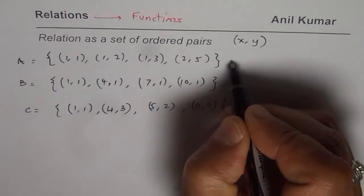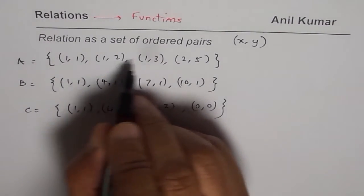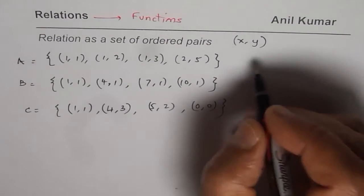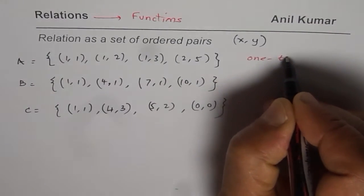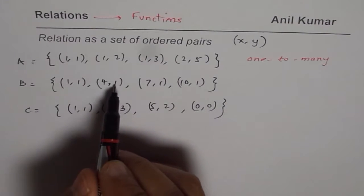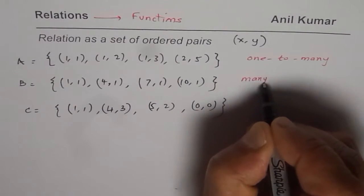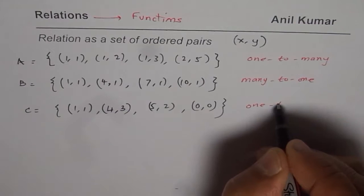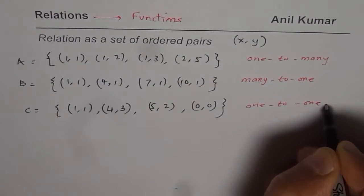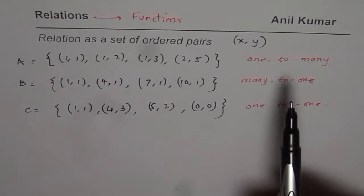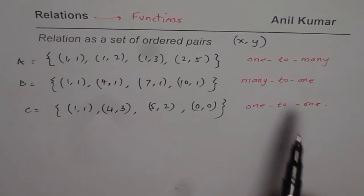So we have 3 different kinds of relations. Relation A is 1-to-many. Relation B is many-to-1. And Relation C is 1-to-1.